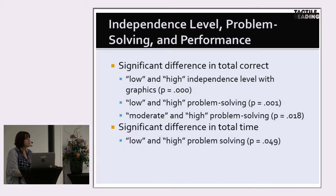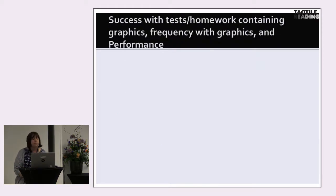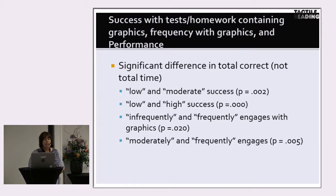Students rated low versus high on problem solving independence had significantly different performance in total number correct and in total time. This makes sense — if you're a good problem solver, you're likely to figure out when something's going wrong faster and have a plan to fix it. Success with tests and homework and frequency of engaging with graphics also showed significant differences, with students rated low on those measures performing significantly worse than those rated moderate or high. Frequency of engaging with graphics directly plays into efficiency and effectiveness.